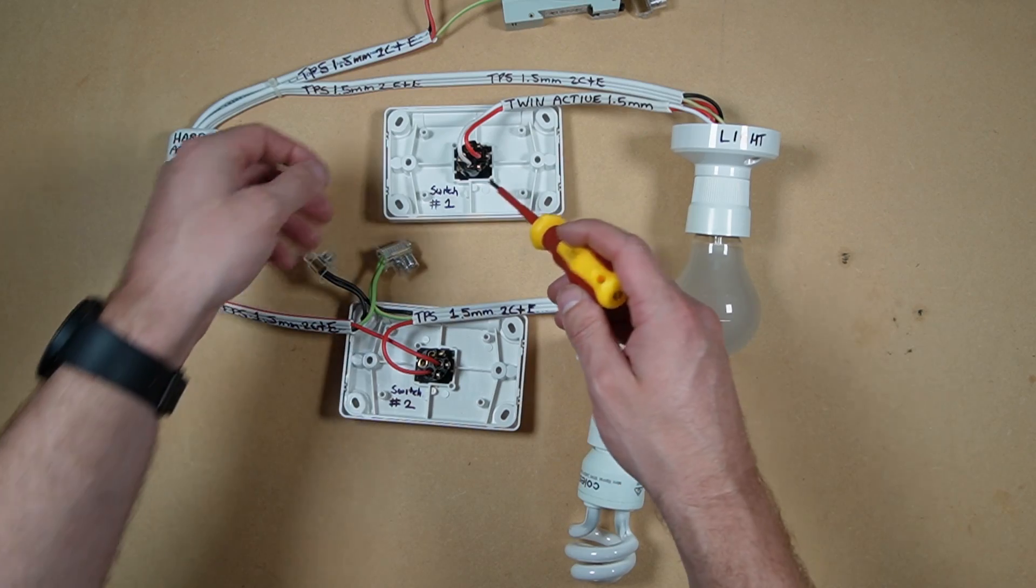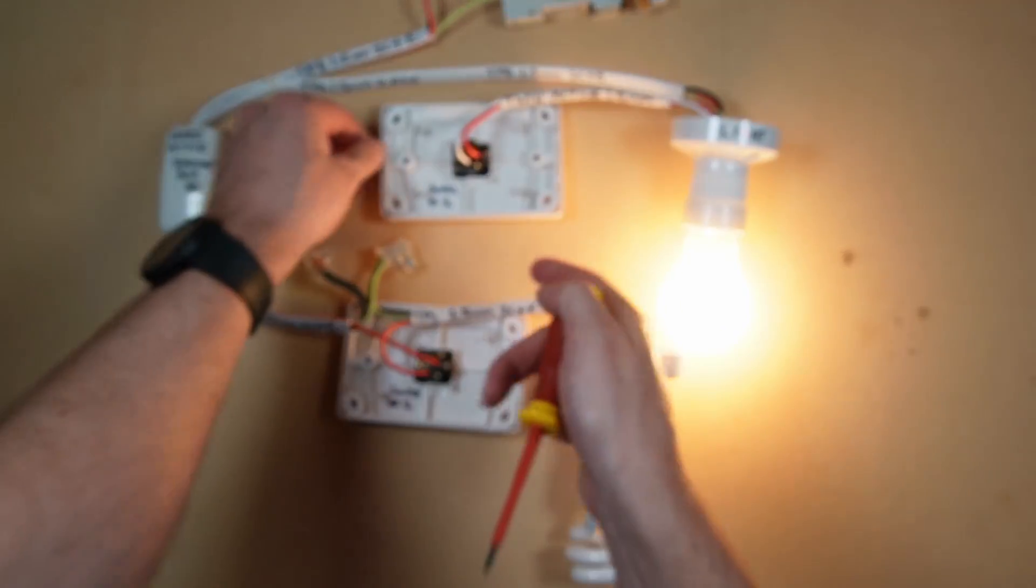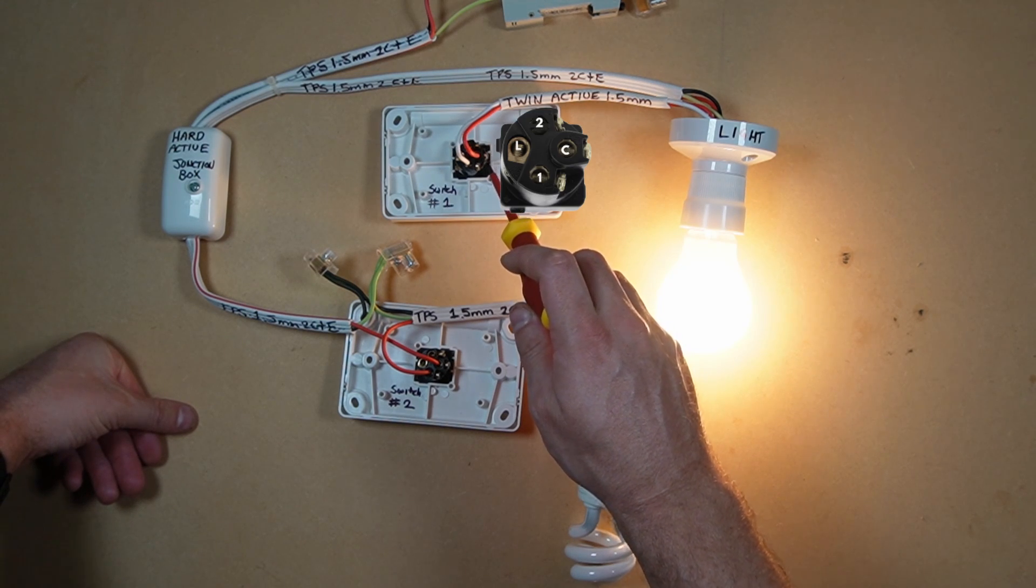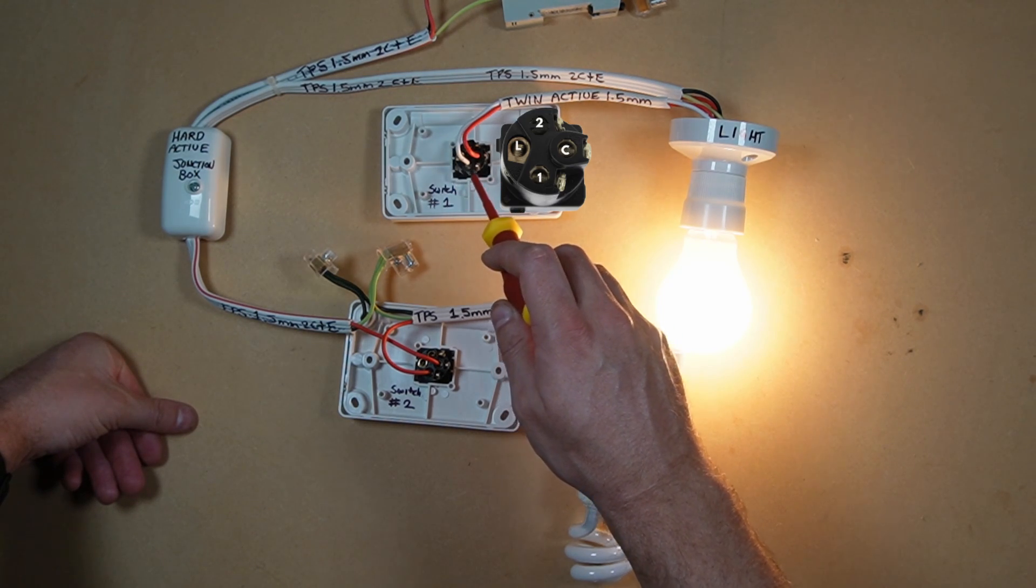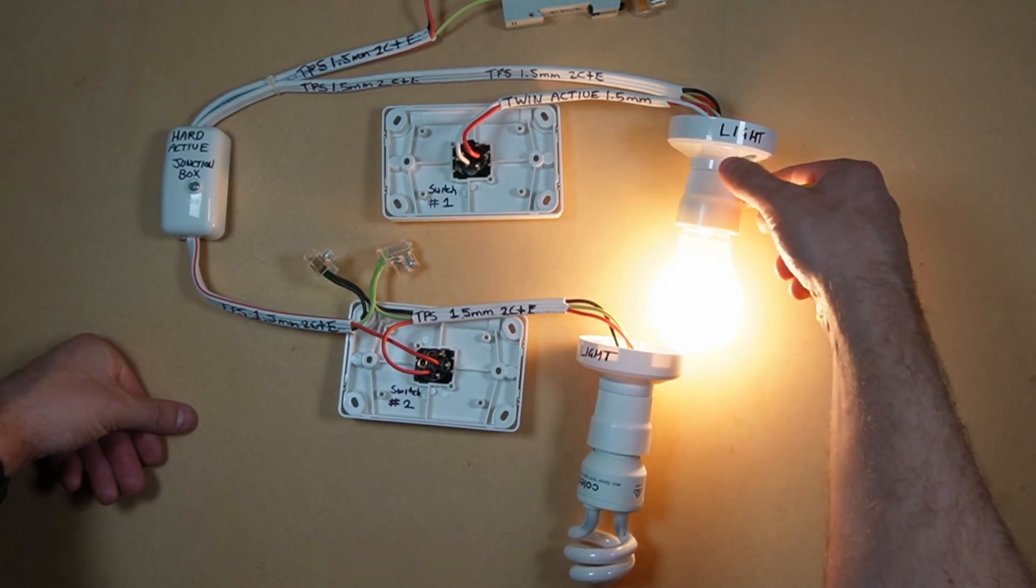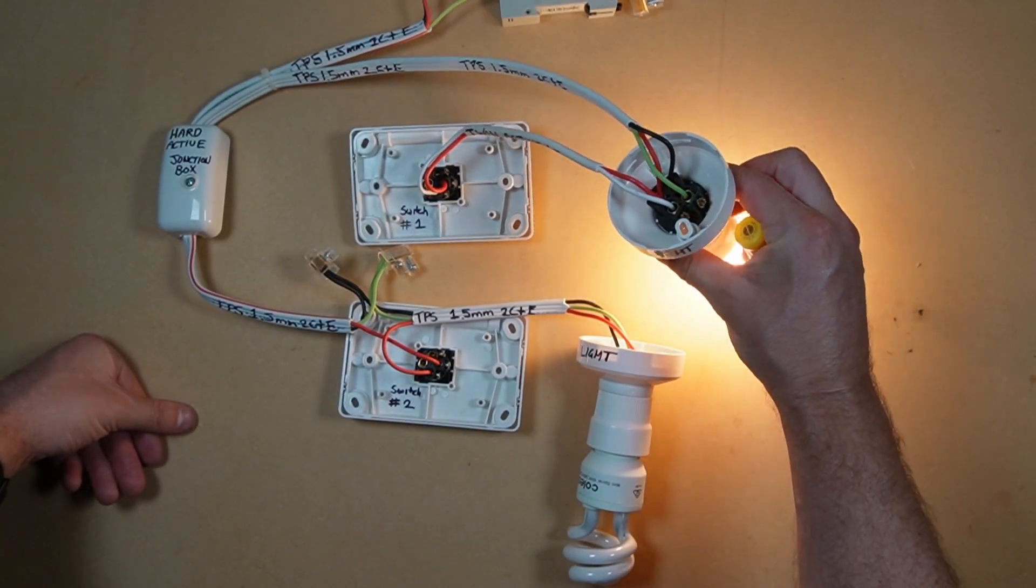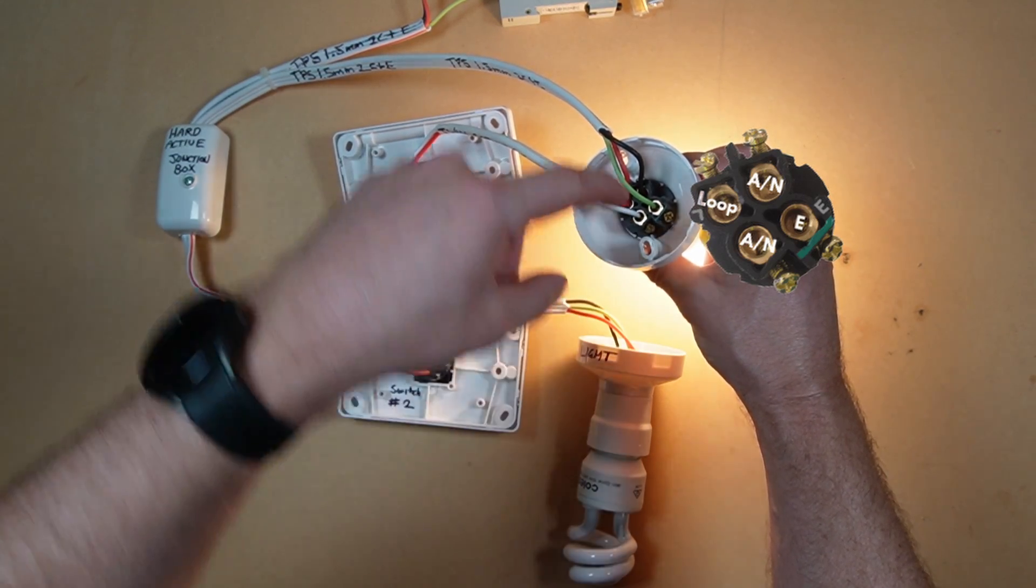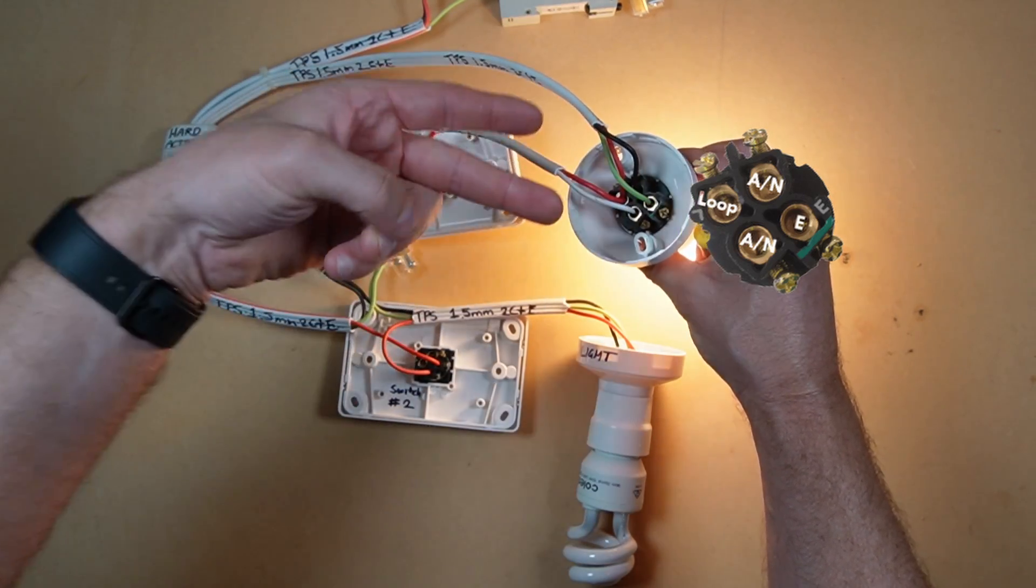When the switch is turned on, the light turns on because the switch closes between common and one, and then the power flows back through the white active conductor to the terminal on the light.